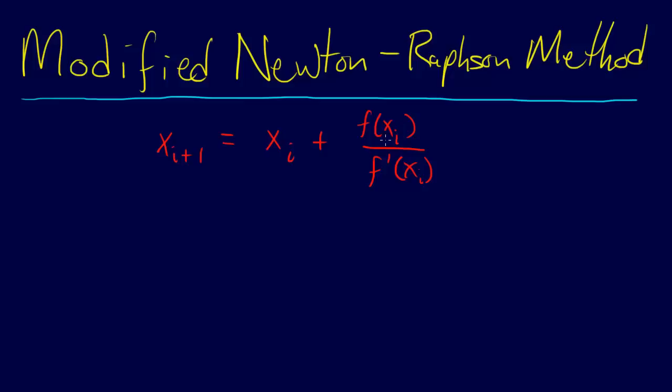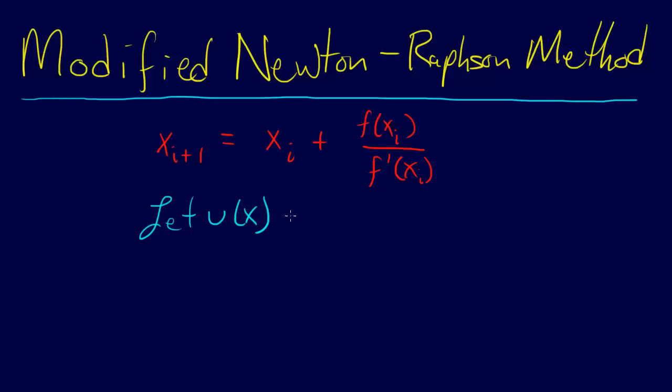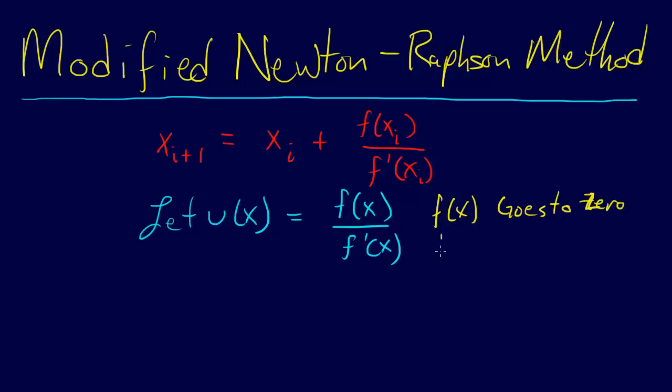What we can do is define a new function u(x), where we let u(x) = f(x) / f'(x). The reason we do this is because of an interesting property: the function f(x) goes to zero faster than f'(x) does.